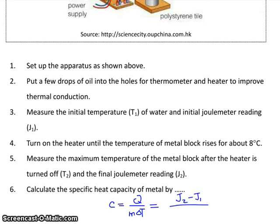The energy supplied is the difference in joulemeter readings and the temperature change delta T is T2 minus T1, and M is the mass of the aluminum block.